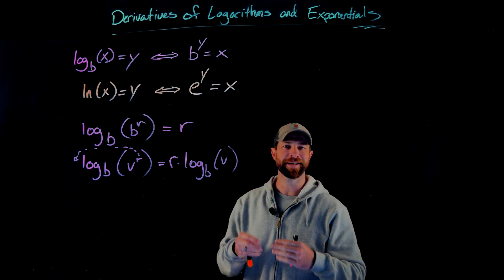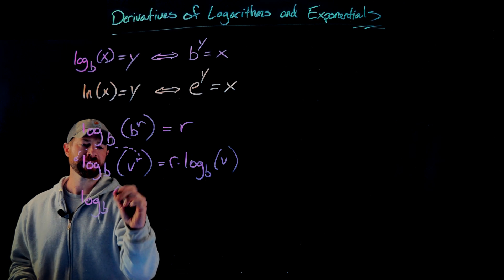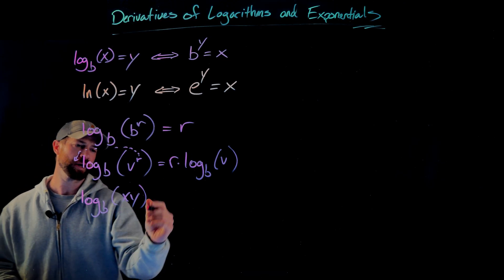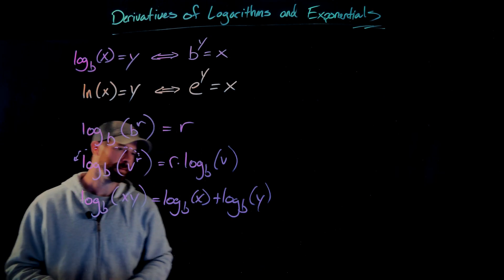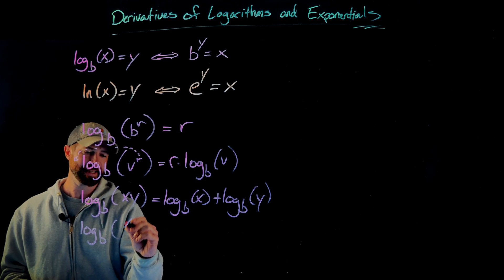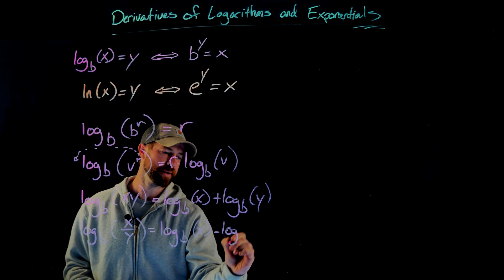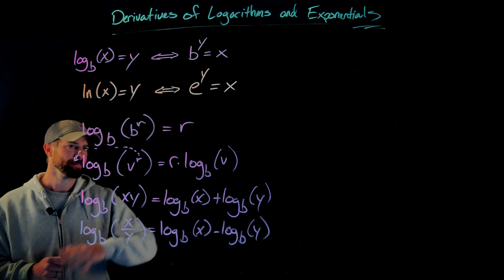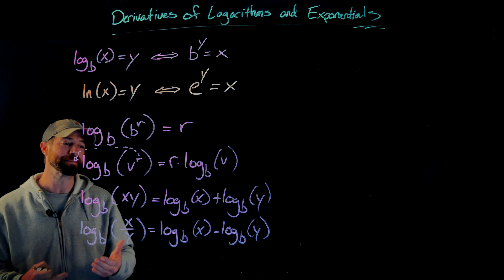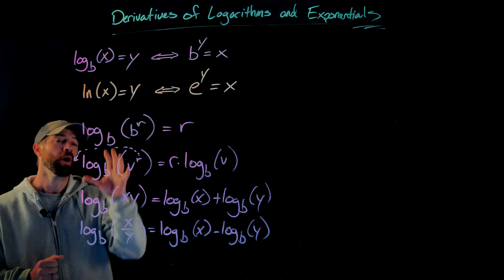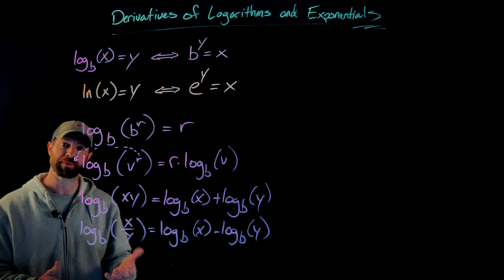Two other important properties are useful when applying differentiation to logarithmic expressions. If we have the log of any base with two values multiplied inside the logarithm, we can split it into two logarithms using addition. Similarly, if we are dividing inside the logarithm, we get the same thing except we subtract the two logarithms. These are exactly the same as the analogous exponent rules. The reason I'm giving you these is that it may be easier to use these properties to simplify your expression before you differentiate.